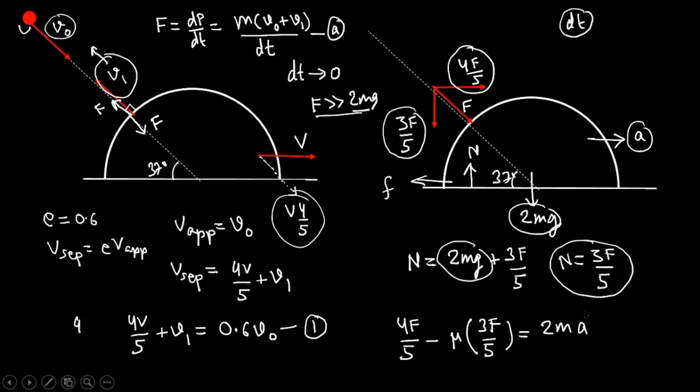Now a is what? a = dv/dt. And dv is change in velocity, final velocity minus initial velocity. Initial velocity was zero and final velocity is V. So we can write this is V/dt. This is a.